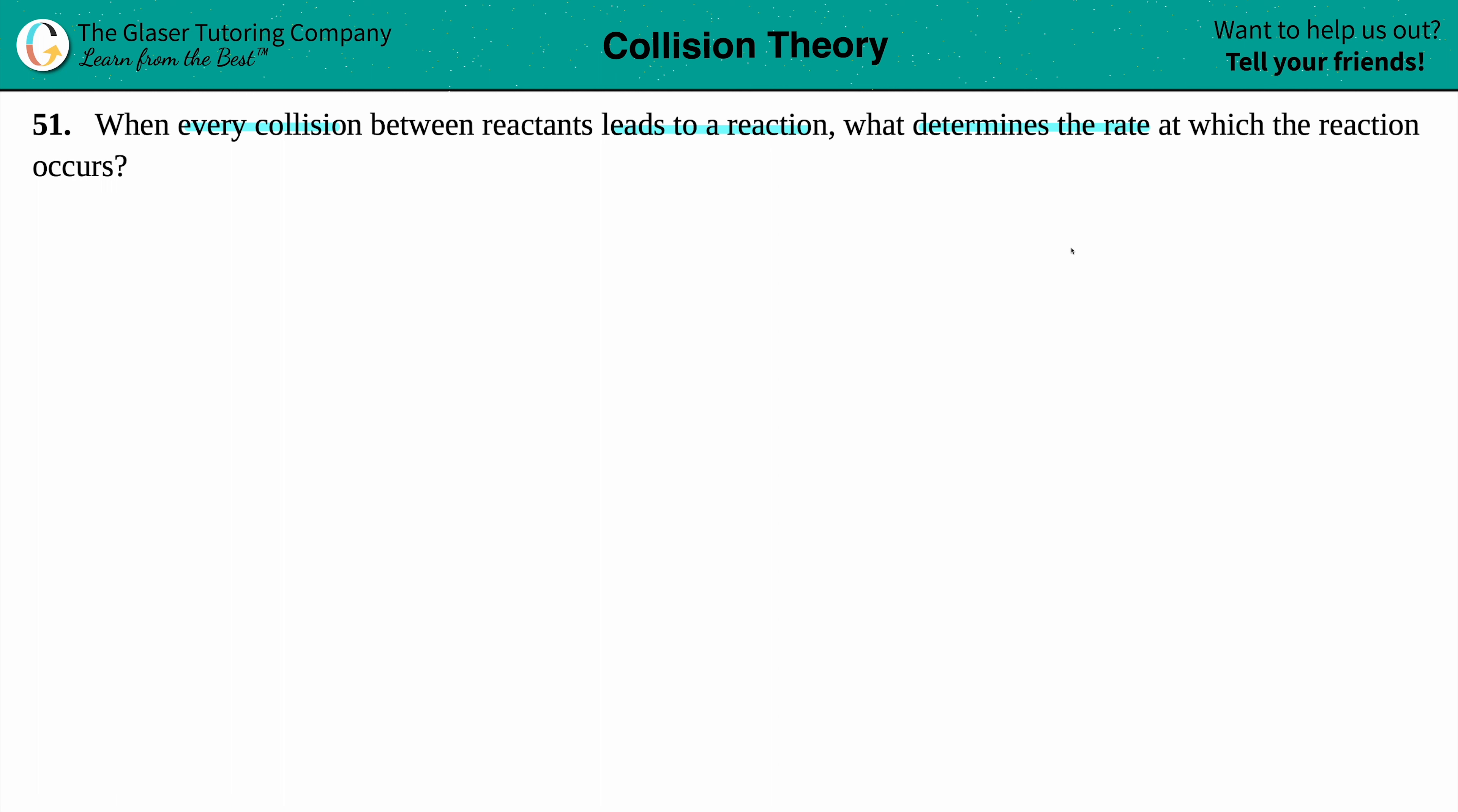Okay, so in this question we are assuming that every time that two reactants come together and they collide, they will lead to a reaction. But what is going to determine the rate? And the rate is basically just saying how fast a reaction occurs.